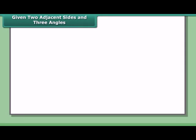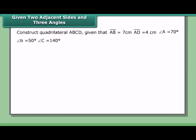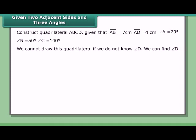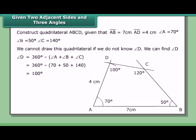Given two adjacent sides and three angles, construct quadrilateral ABCD where AB = 7 cm, AD = 4 cm, angle A = 70°, angle B = 50°, and angle C = 140°. We cannot draw this without knowing angle D, but we can find it: angle D = 360° − (70° + 50° + 140°) = 100°.